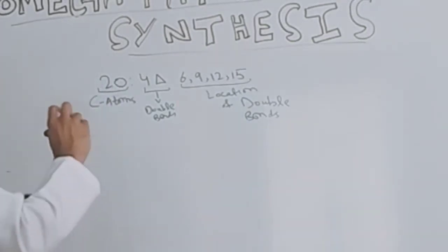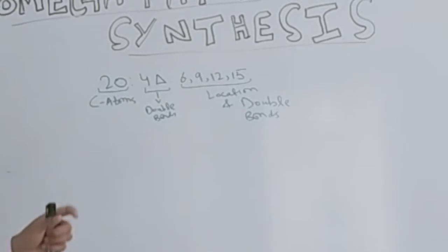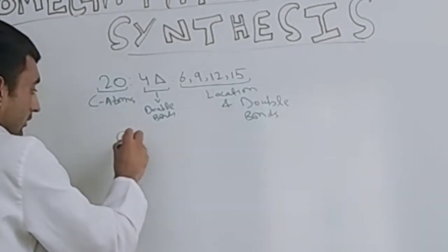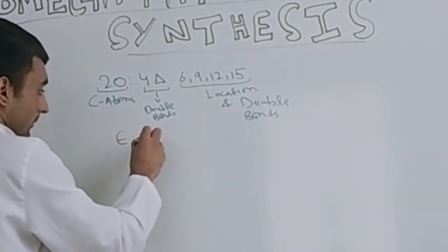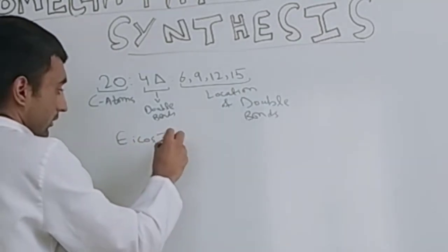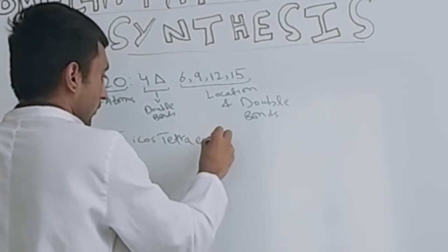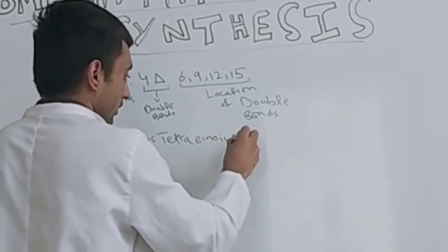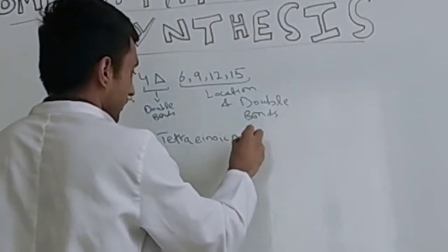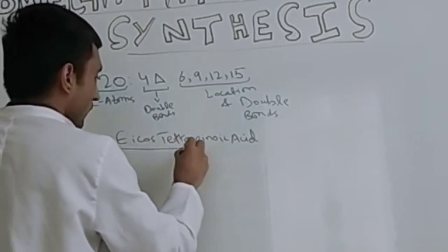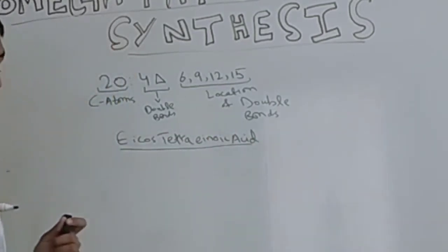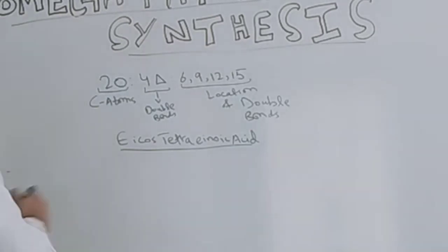So in this way we actually write the double bonds. What would be the name of this? The name of this chain would be eicosatetraenoic acid.